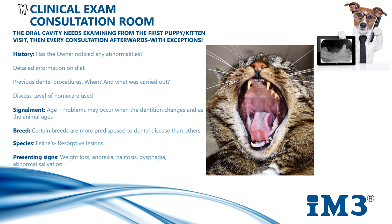Signalment — look out for any developmental problems, formation abnormalities or eruption problems. Problems may also occur when the dentition changes as the animal ages. Certain breeds are more predisposed to dental disease than others. For example, our brachycephalic breeds and small breeds are more likely to develop significant oral disease earlier due to overcrowding and the physical shape of the head.